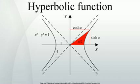Relationships to ordinary trigonometric functions are given by Euler's formula for complex numbers. So thus, hyperbolic functions are periodic with respect to the imaginary component, with periods 2πi and πi for hyperbolic tangent and cotangent.